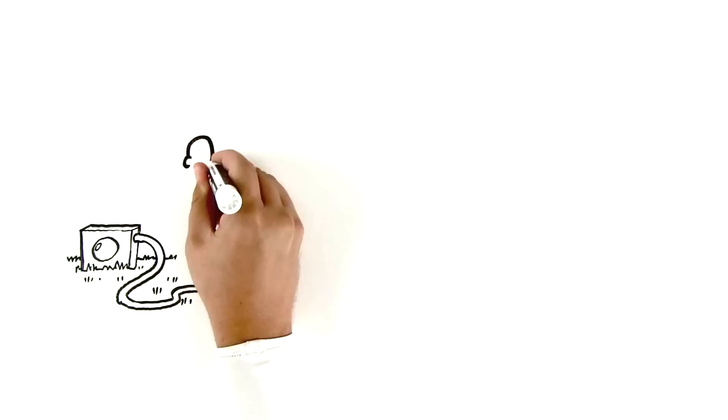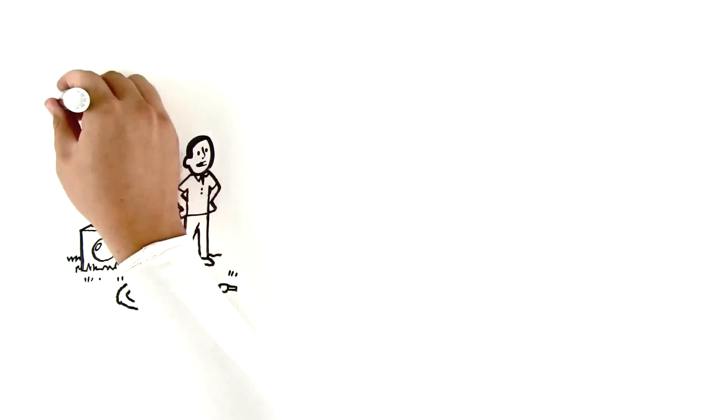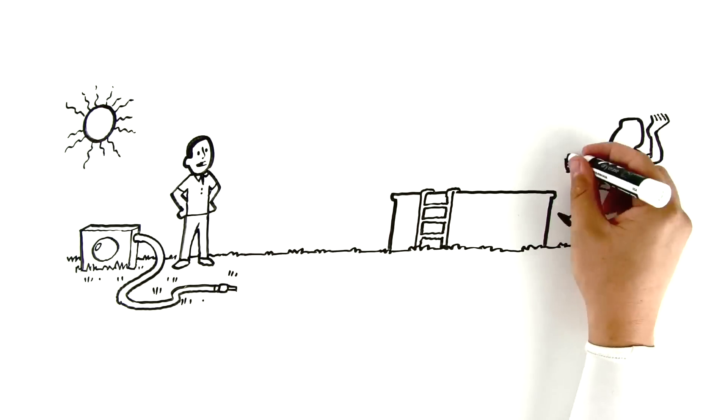Thankfully, Jim has restricted his lawn watering, but his neighbor Sue has another problem. She has a pool, so her electricity and water bills are even higher.